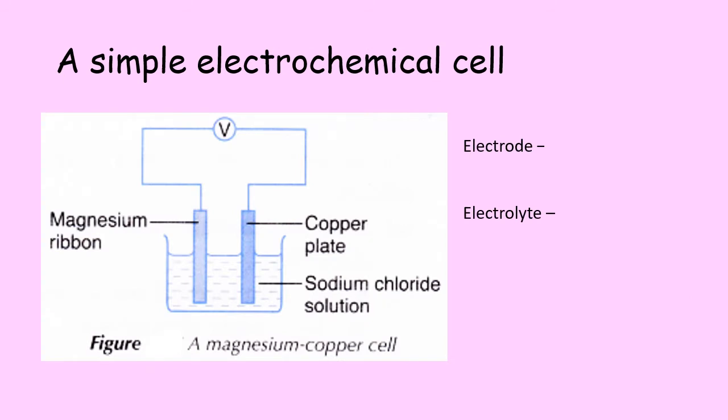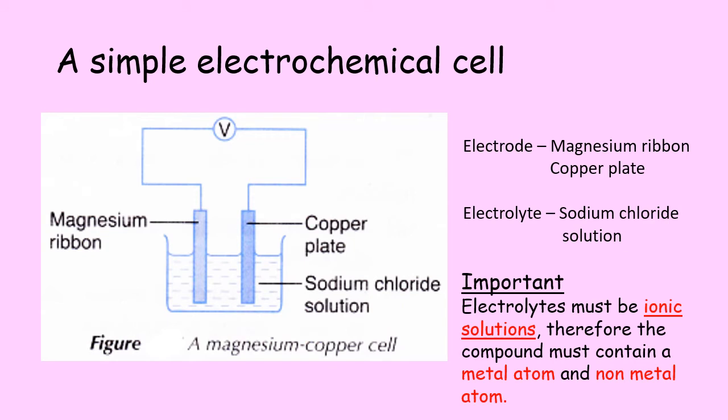The cell looks like this. You can see we have wires connecting two metal rods, which we call electrodes, and they are inside a solution. The electrodes are magnesium ribbon and a copper plate. The electrolyte is sodium chloride solution. It's important to remember that an electrolyte must be an ionic solution — a solution of a compound made from a metal and a non-metal.